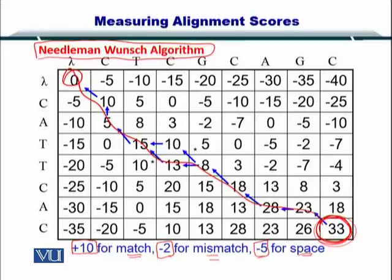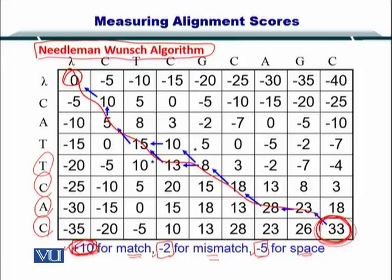We used these scores regardless of which nucleotide we were talking about — all nucleotides were evaluated using the same match, mismatch, and gap penalty. As I just mentioned, this should not be the case. Certain amino acids and nucleotides have a higher propensity to match or mismatch, so we need to consider all of these and assign a score accordingly, rather than using uniform scores for the three parameters.